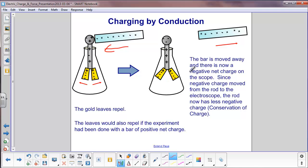So now you have a net negative charge on the electroscope. Now, the other interesting point is the rod here now has less negative charge than when it started because it gave some of it up to the electroscope. And because of the conservation of charge, if this gains negative charges, this must lose the negative charges.